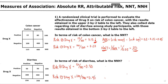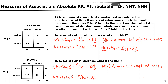Because the risk of the outcome is higher among those who received the drug or the intervention, we know we're dealing with a harmful exposure, and therefore we need to calculate the attributable risk. The attributable risk is risk among the exposed minus risk among the unexposed, which equals 0.5 minus 0.4, equal to 0.1. Because this is a harmful exposure, we calculate the number needed to harm, which is 1 over the attributable risk — 1 over 0.1 — equal to 10.